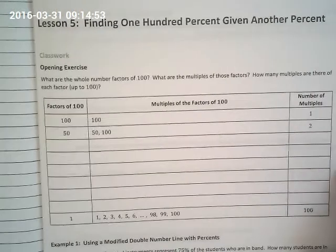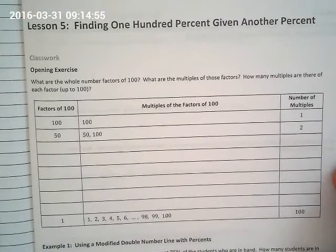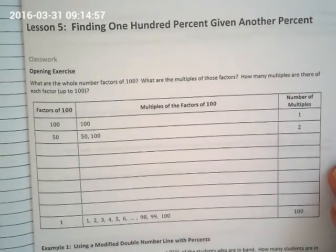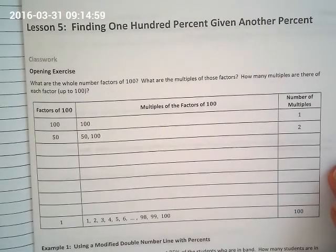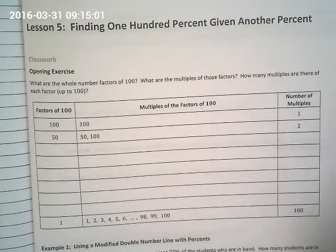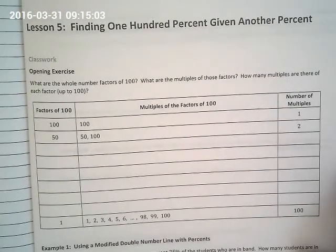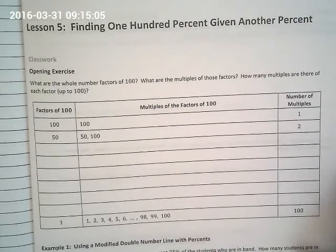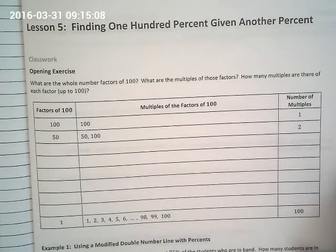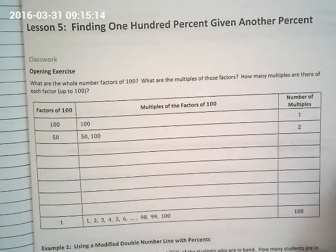Okay, so this is our last lesson in this packet and if we're lucky we might get to finish before a break. I'm still going to collect them from you guys to score them. It's on page 30 and it's finding 100% given another percent. So if we're given another percent we can always set up a proportion.